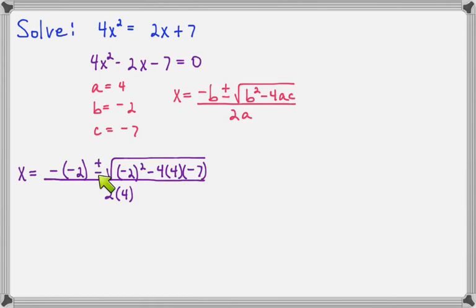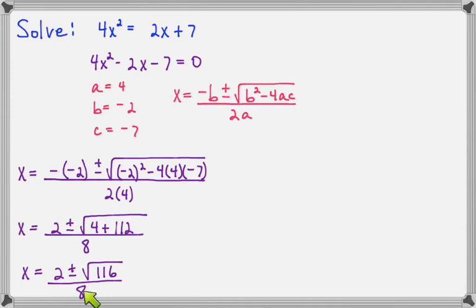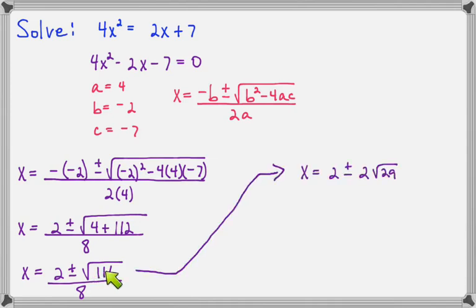We have x equals negative negative 2 plus or minus the square root of negative 2 squared minus 4 times 4 times negative 7, all over 2 times 4. For our first simplification, negative negative 2 makes positive 2. Under the radical, negative 2 squared makes positive 4. Negative 4 times 4 makes negative 16, and negative 16 times negative 7 makes plus 112. In the denominator, 2 times 4 makes 8. Combining 4 plus 112 gives us 116. Now 116 contains a factor of 4, so 116 is 4 times 29. The square root of 4 is 2, and the 29 stays under the radical, with 8 still in the denominator.